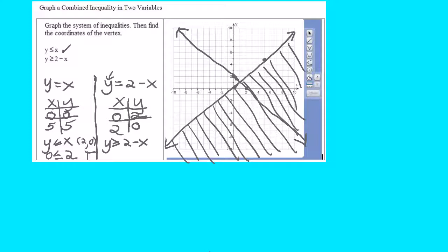Y is greater than or equal to 2 minus x. This time I can use 0, 0 because this line, y equals 2 minus x, does not go through 0, 0. So let's see. If I choose 0, 0, then I'll put a 0 in for y and a 0 in for x. And that's false because 0 is not greater than 2.